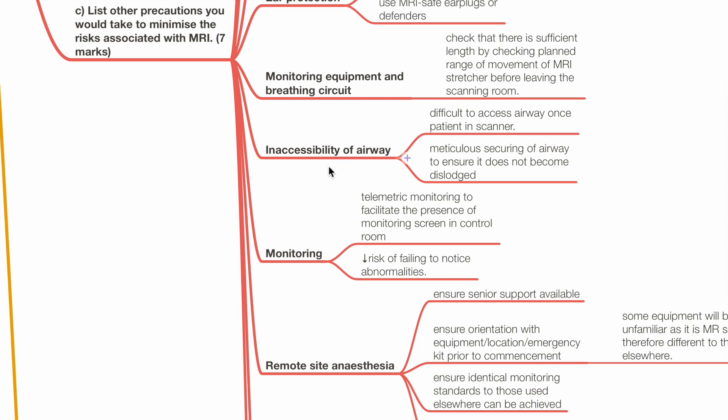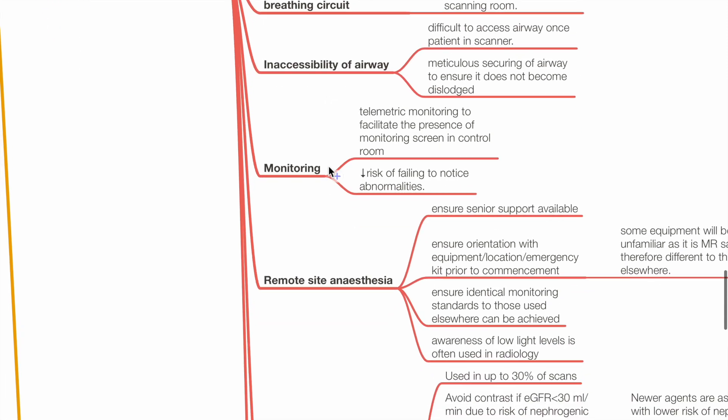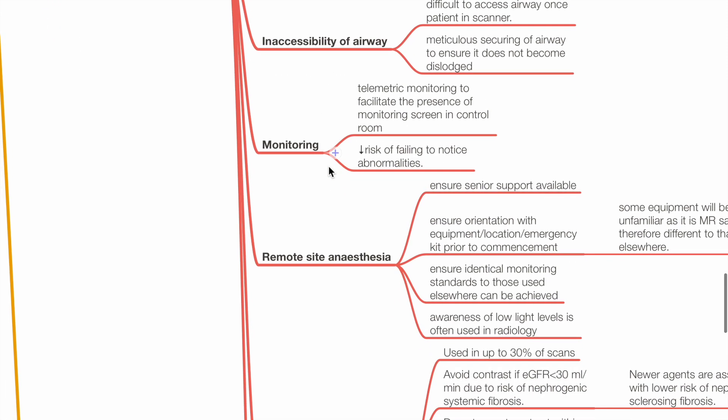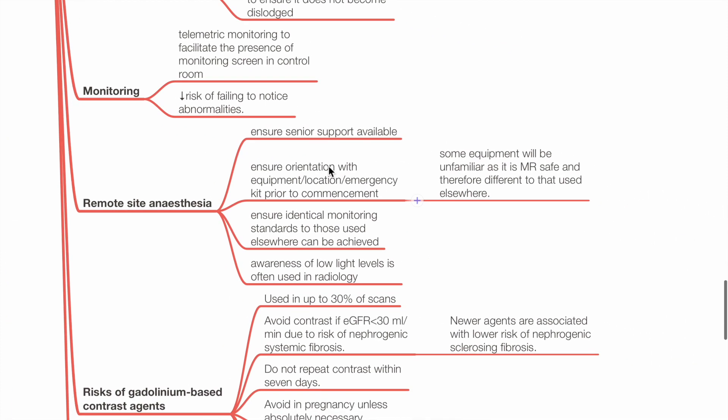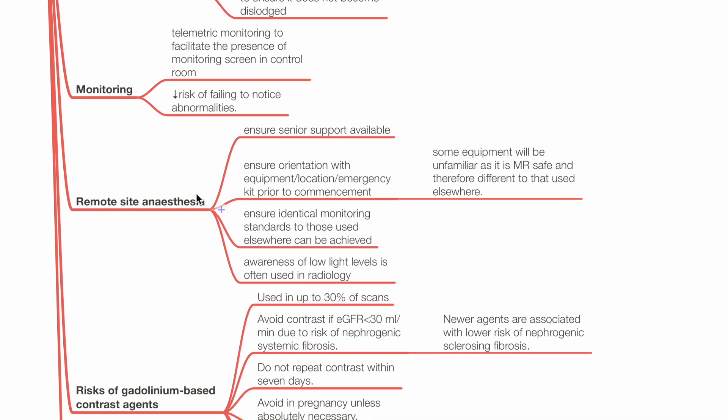Inaccessibility of airway: there is difficulty accessing the airway once the patient is in the scanner. Meticulous securing of the airway should be performed to ensure it does not dislodge. Telemetric monitoring facilitates the presence of a monitoring screen in the control room, reducing the risk of failing to notice abnormalities.